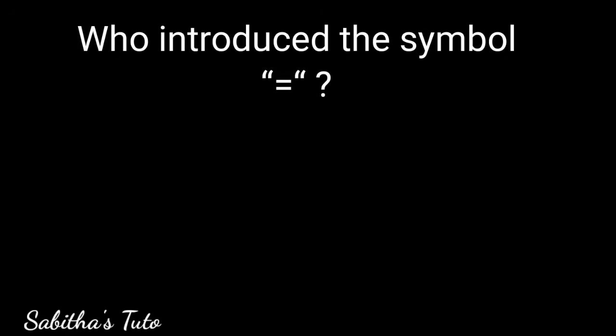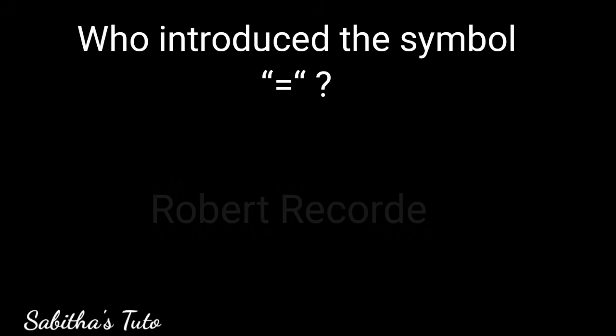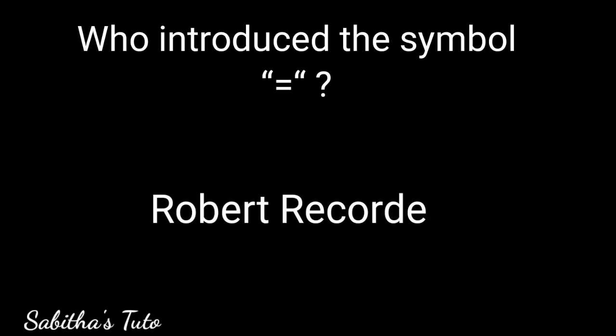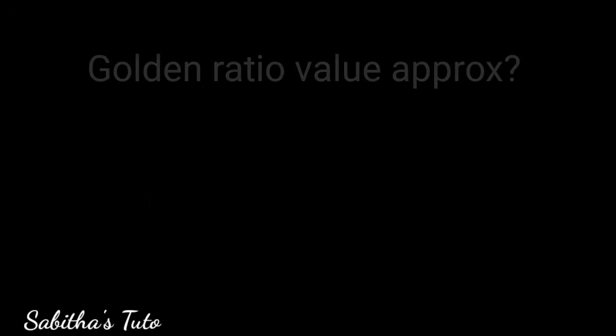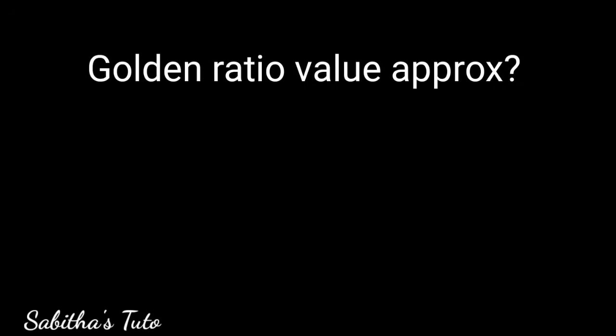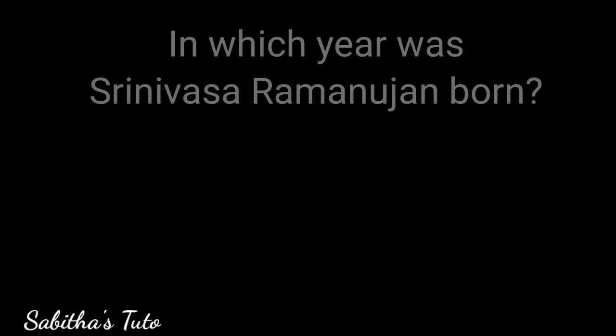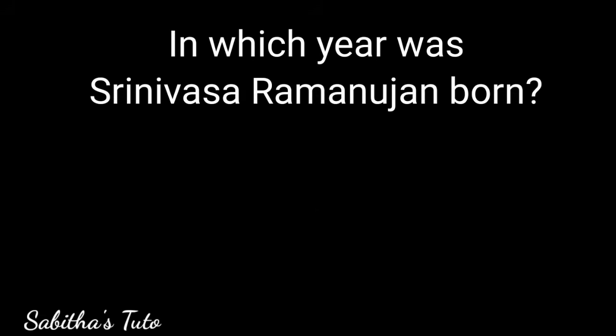Who introduced the symbol of the equal sign? Robert Recorde. What is the approximate value of the golden ratio? 1.618.